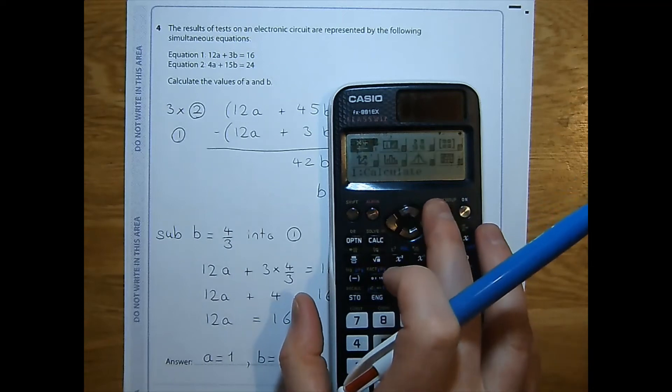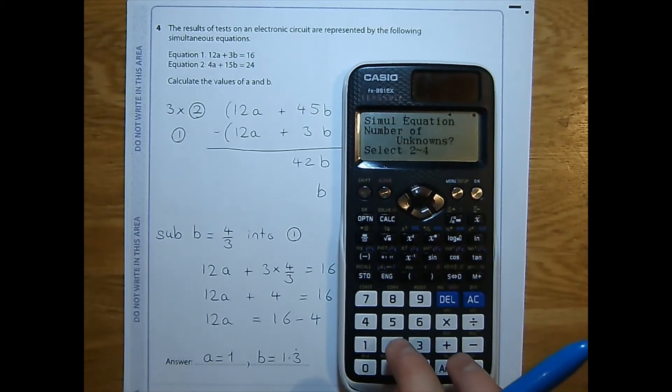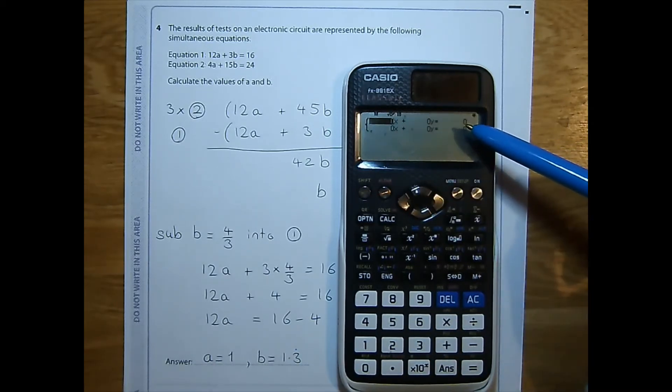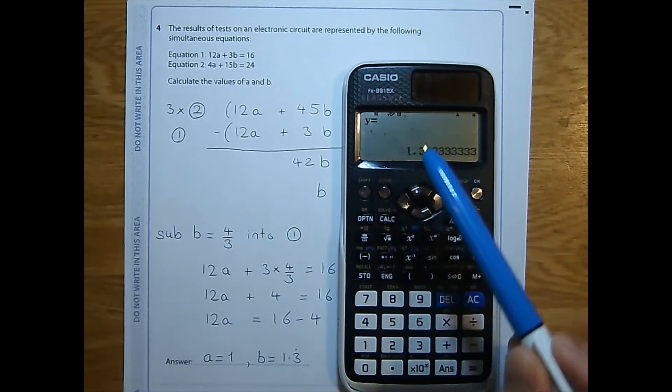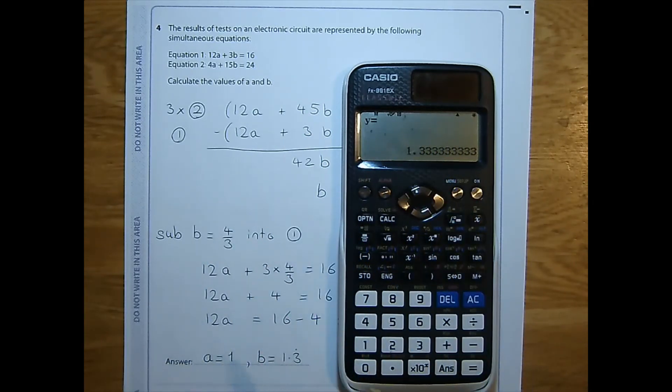One final point of course, don't forget that you can use the calculator to check your work. If we want to press 1 for simultaneous equations we've got two unknowns and we're going to have to make a into an x and b into a y but that's easy enough. 12x, 3y is 16. 4x, 15y, 24. And then that gives us our value x which we said was a is 1, that's what we've got, and y is 1.3 recurring which is what we've got. If you just use the calculator and give the answers you'll get no marks. This is a method for checking your work so make sure you go through all the algebra to get the marks but just check you're right using the calculator at the end.